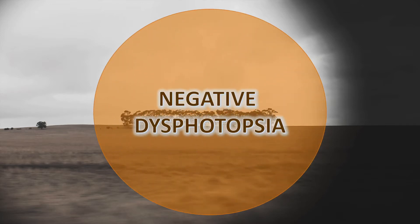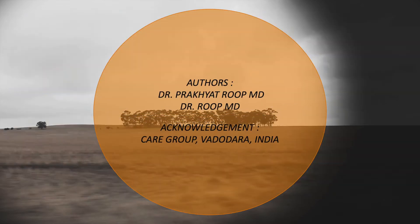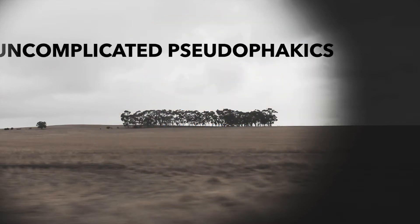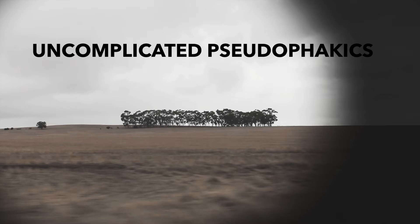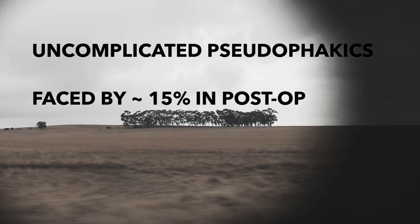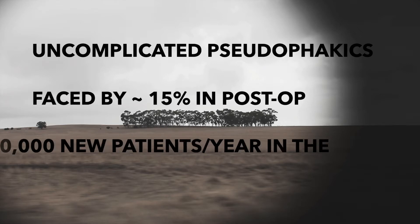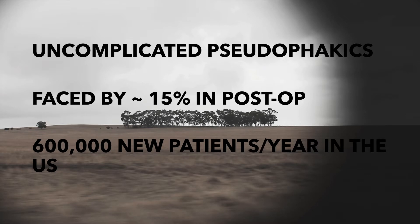Negative dysphotopsia is a side effect of modern-day IOL surgery that has a unique place in the list of ocular diseases, because it affects eyes that have undergone a well-executed cataract surgery rather than a botched procedure. Approximately 15% of uncomplicated pseudophakics have symptoms of negative dysphotopsia, and while symptoms diminish in most patients, up to 3% continue to suffer. In the United States alone, 600,000 unhappy pseudophakics are added every year.